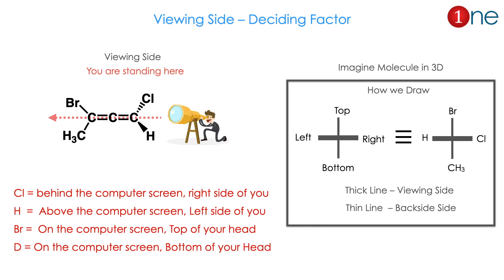Before we analyze R and S configuration, you have to know the viewing side — it is a deciding factor. Here I choose the chlorine side as the viewing side. Chlorine is below the plane and hydrogen is above the plane. So if you stand there, chlorine will be on the right side for you, hydrogen on the left side, bromine will be above your head, and CH3 below. The thick line represents the viewing side (front), and the thin line represents the back side.